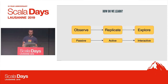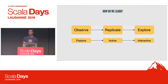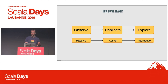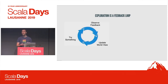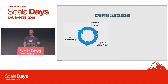But how do we learn? It turns out that often we can look at learning as a three-phase process. We usually start with observing things, and then we try to replicate the things we've observed, like trying some examples of code ourselves. And finally, we start exploring — start changing things and try something new. And that exploration phase is essentially an interactive feedback loop. In that loop, we start with trying something new, and then we observe the feedback we get from the world. And based on that feedback, we update our internal model — so we learn.